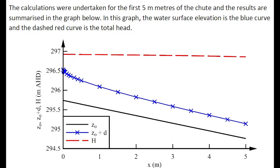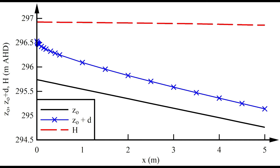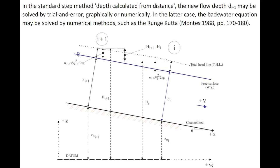The calculations were undertaken for the first 5 meters of the spillway chute, and the results are summarized in the graph below, with the water surface elevation in blue and the total head in dashed red curve.